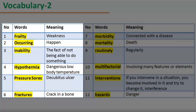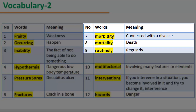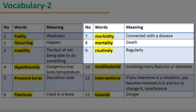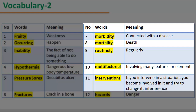Number 6: Word 'fracture', meaning crack in a bone. Number 7: Word 'morbidity', meaning connected with a disease. Number 8: Word 'mortality', meaning death. Number 9: Word 'routinely', meaning regularly. Number 10: Word 'multifactorial', meaning involving many features or elements. Number 11: Word 'interventions', meaning if you intervene in a situation, you become involved in it and try to change it. Number 12: Word 'hazards', meaning danger.